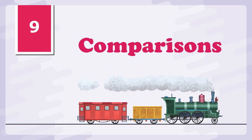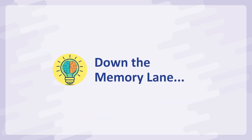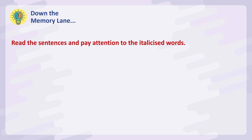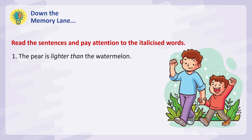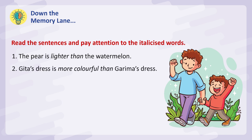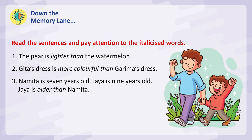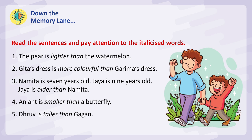Lesson 9: Comparisons. Read the sentences and pay attention to the italicized words. The pear is lighter than the watermelon. Geeta's dress is more colorful than Garima's dress. Namita is 7 years old, Jaya is 9 years old — Jaya is older than Namita. An ant is smaller than a butterfly. Dhruv is taller than Gagan.